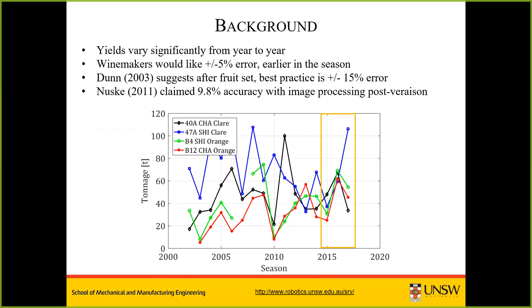Winemakers would like to have an accuracy of around 5% error in terms of how much fruit turns up at the winery. That was the target we set for this project — to see how close we could get to 5% error and as early in the season as possible. Previous work by project manager Greg Dunn showed that best practice manual yield estimation achieved around 15% error after fruit set. He also looked at early image processing work in vines to detect the amount of fruit.